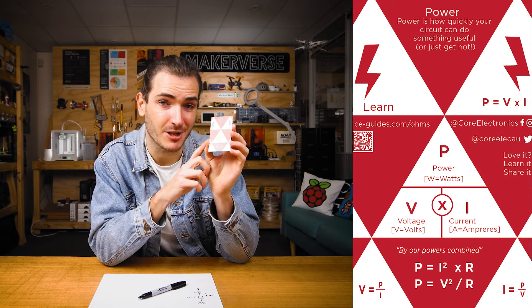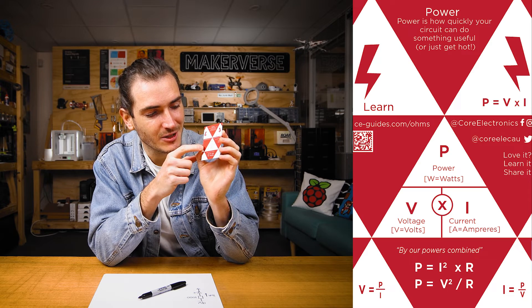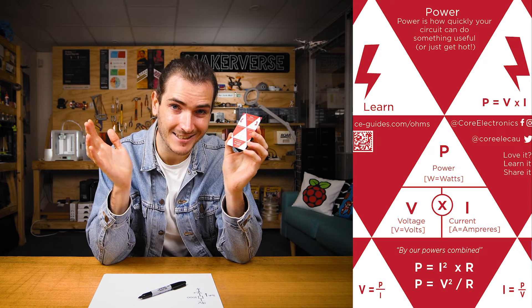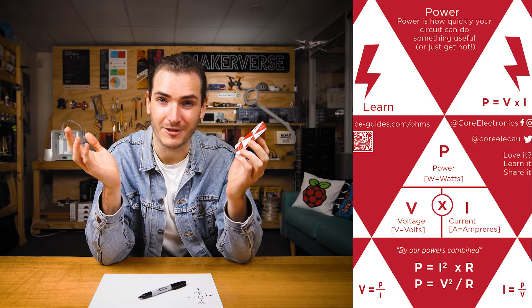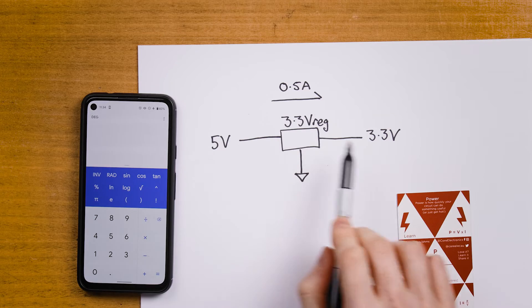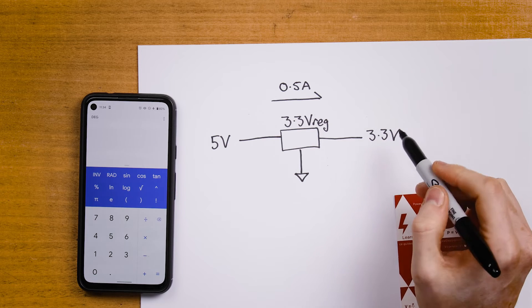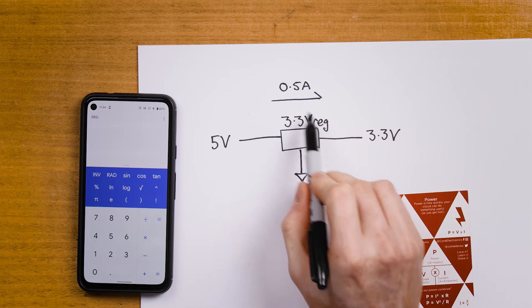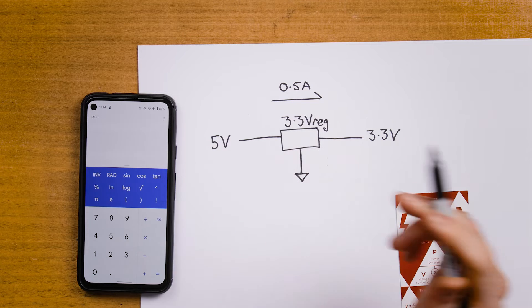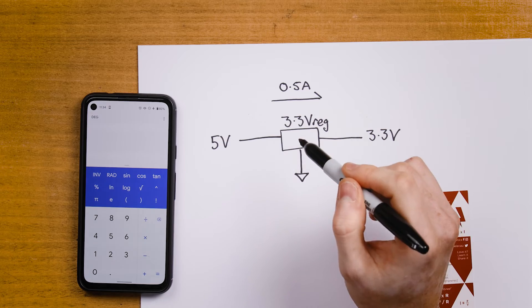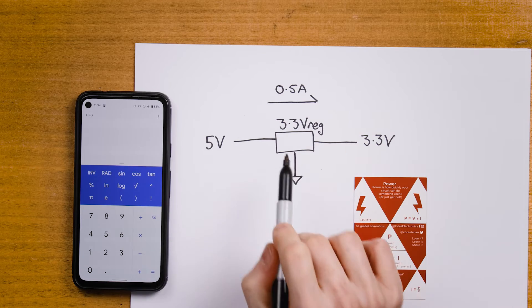On the back of this card is another relationship for power: power is equal to voltage times current. We use this triangle in exactly the same way — cover up what you want to solve for and read the rest of the equation. A practical example where you might need to calculate power is voltage regulators, which take one voltage — for example 5 volts — and regulate it down to another, say 3.3 volts. They are often rated for a maximum power such as 1 watt, half a watt, or 5 watts.